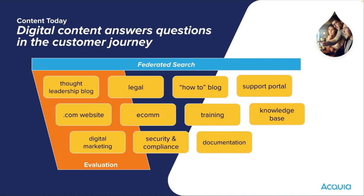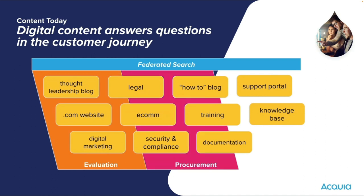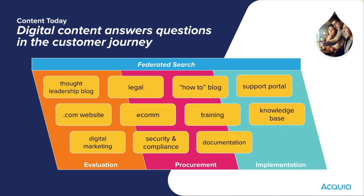You can also say that content is part of different stages of the customer journey. At the beginning, during evaluation, customers are looking for what products might help with their problems. Then in procurement, they need to know what to consider before making a purchase. Finally, post-purchase, they need help implementing. This content has a different purpose depending on where the customer is in their journey. Different parts of the organisation — sales and marketing for evaluation and procurement, customer success for procurement and implementation — are responsible for managing and maintaining that content.